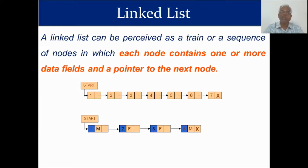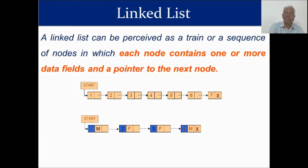Each node contains one or more data fields, but the pointer is always one — which points to the next node. In the first example, numbers 1 through 7 are the data fields. The next part is the link, that is, the pointer to the next node — represented by the arrow mark. Node 1 points to 2, 2 points to 3, and so on.